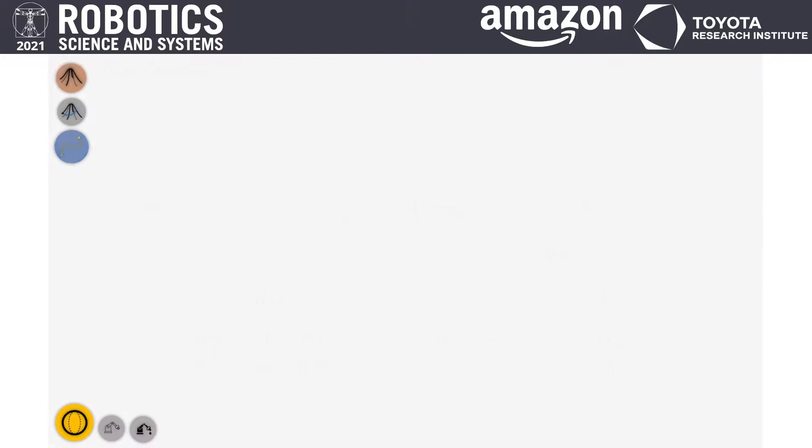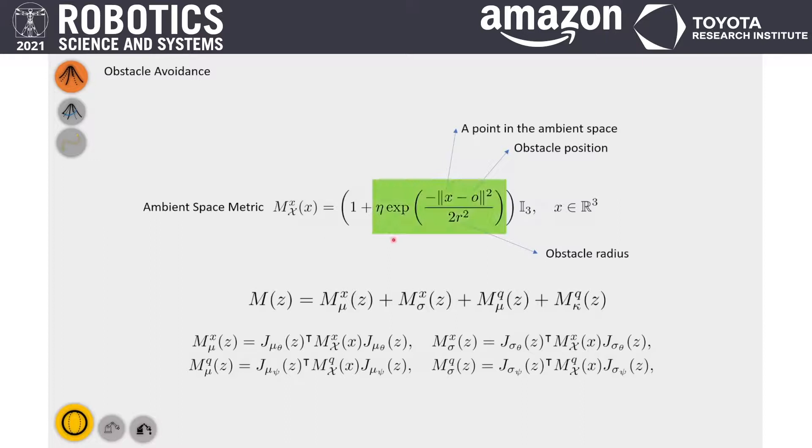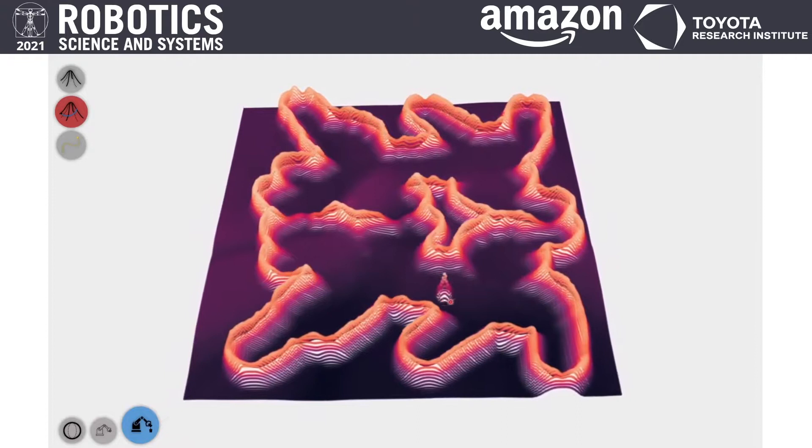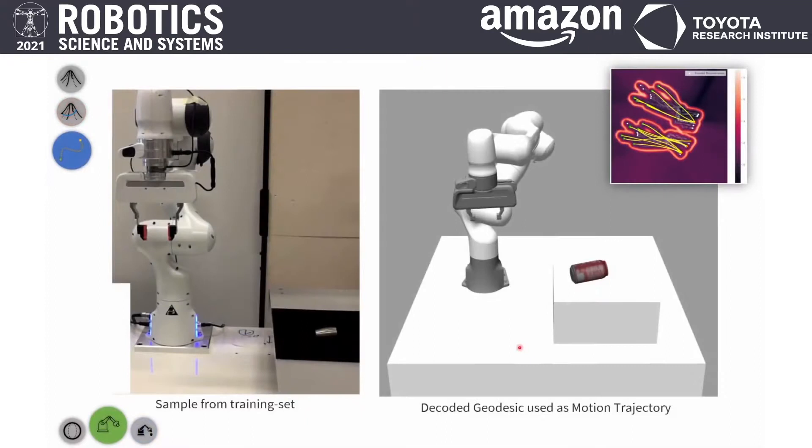But regarding obstacle avoidance, since the obstacles are not defined in a latent space, we have used an ambient space metric. This simple example shows the obstacle is defined as a normal distribution. This means the points in the ambient space that are closer to the obstacle will get a high value. Therefore, by multiplying this metric to the metric we already have, we get a new metric that has high-energy regions around the obstacle. This short animation shows that there is an obstacle that has a high-energy region around it which repulses the geodesics.